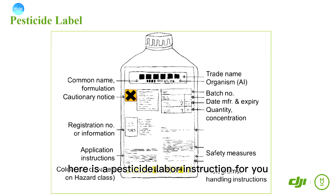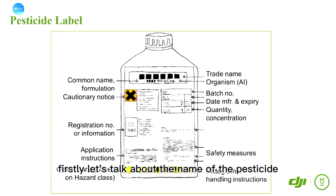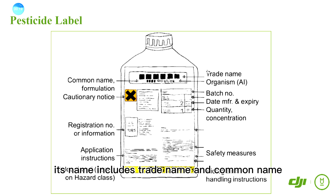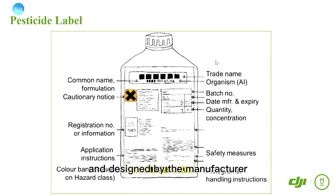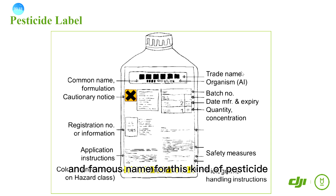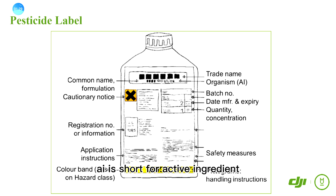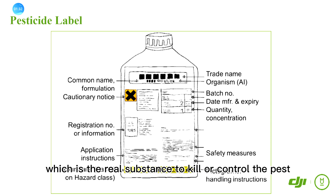Here is a pesticide label instruction for you. Firstly, let's talk about the name of the pesticide. Generally, for a kind of pesticide, its name includes a trade name and a common name. The trade name is usually made and designed by the manufacturer — they could design a good, well-known trade name for this kind of pesticide. The common name is usually made based on the AI, which stands for active ingredient.